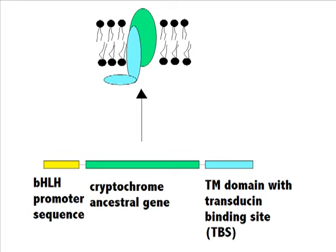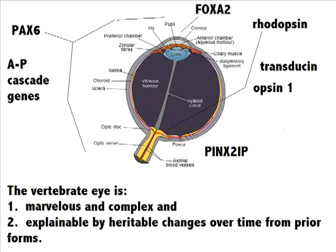These specialized eye structures would also be selected for and inherited, giving rise to a whole family of genes specialized for light capture, signal transduction, and eye structural elements. In conclusion, the vertebrate eye is marvelous and complex, but it is highly possible by incremental changes through natural processes we can observe today.